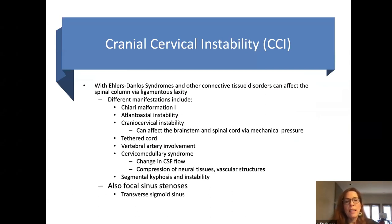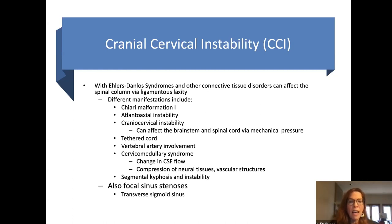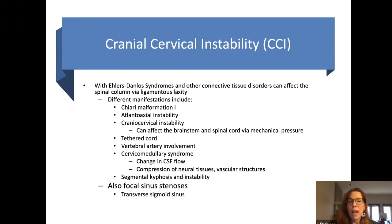Along with hypermobile EDS and other connective tissue involvement, you can have many different spinal column involvements because of ligament laxity — the ligaments try to keep everything aligned. This includes tethered cord and also focal sinus stenosis. We're finding this more and more in patients with Chiari and CCI. The transverse sigmoid sinus seems to be the most common one involved with stenosis, because the connective tissue in vessel walls means these vessels sometimes don't deliver blood flow appropriately and the vessel collapses upon itself.